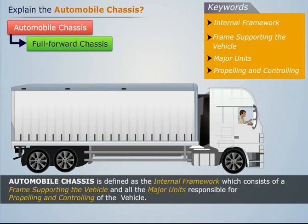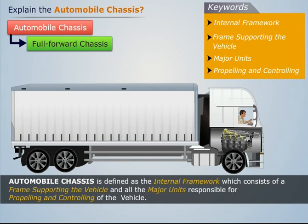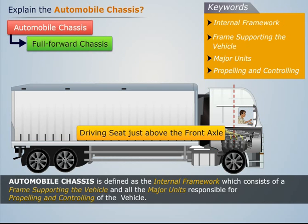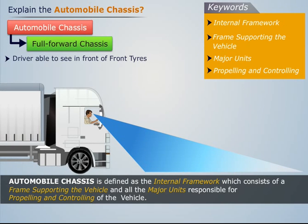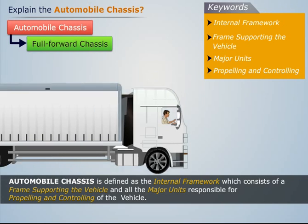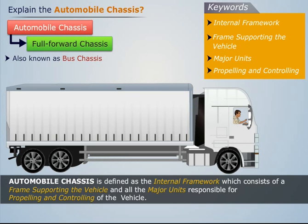In full forward chassis, the complete engine is mounted inside the driver's cabin. Here, the driver's seat is just above the front wheels and the driver is able to see the road just in front of the front tires. Also, the space for carrying passengers or goods increases. This type of chassis is also known as bus chassis.